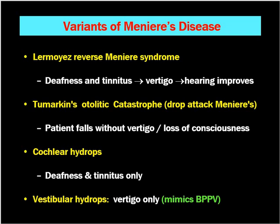Next is Tumarkin's otolithic catastrophe, or drop attack — the patient falls suddenly without vertigo or loss of consciousness, and there are no central symptoms. Next is cochlear hydrops, where there is deafness and tinnitus only, without vertigo — only cochlear symptoms — which is a variant of Meniere's disease. Finally, vestibular hydrops presents with only vertigo and mimics benign paroxysmal positional vertigo.